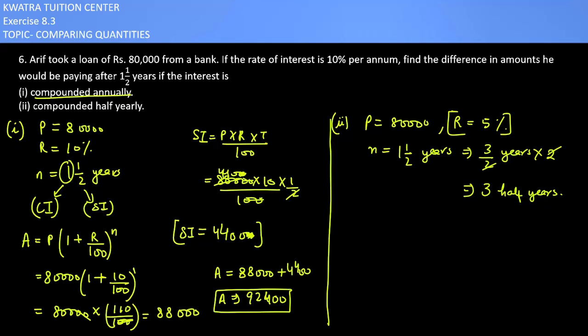Now you can find the amount using the formula: A equals P times (1 plus r over 100) raised to power n. Principle is 80,000 into 1 as it is, rate is 5 over 100, raised to power 3. It will be 105 over 100 cubed.